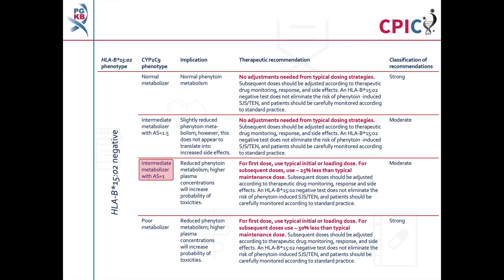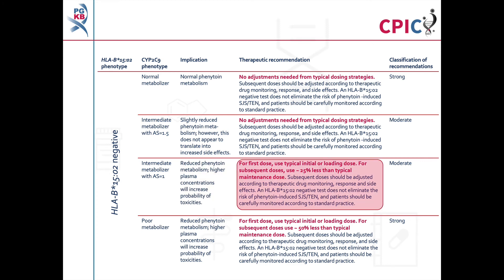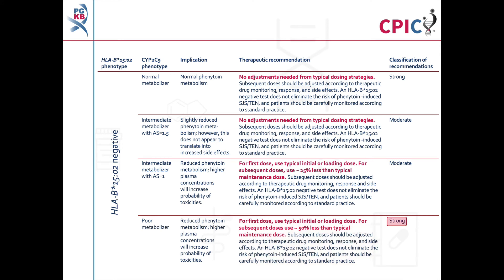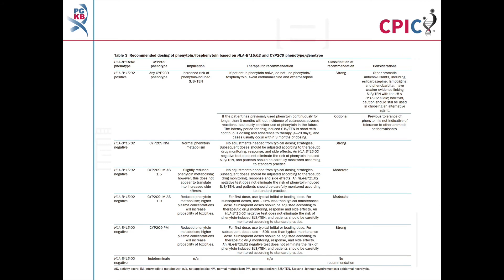Patients who are CYP2C9 intermediate metabolisers with an activity score of 1 will have reduced metabolism of phenytoin and are more likely to experience drug toxicity. An approximately 25% reduction in maintenance doses should be considered for these patients. This is a moderate recommendation. Patients who are CYP2C9 poor metabolisers will have reduced metabolism of phenytoin and are more likely to experience drug toxicity. An approximately 50% reduction in maintenance doses should be considered for these patients. This is a strong recommendation. The dosing recommendations for phenytoin can be found in Table 3 of the guideline.